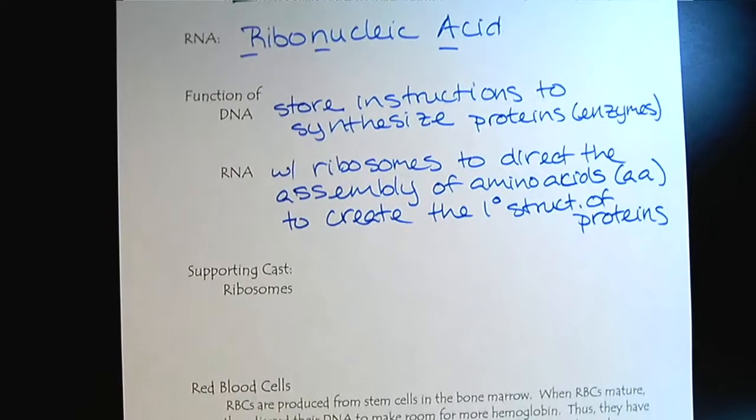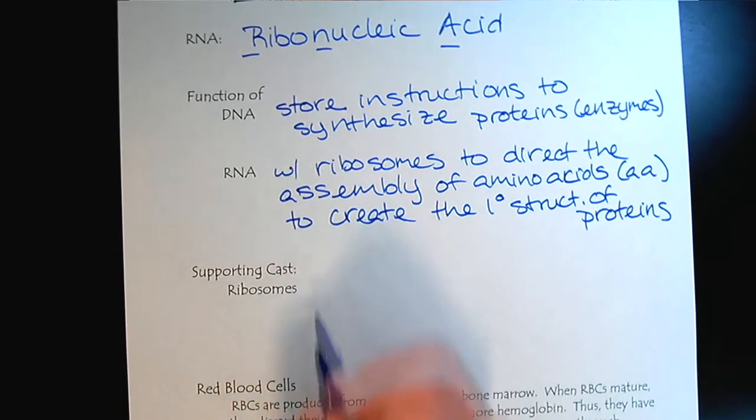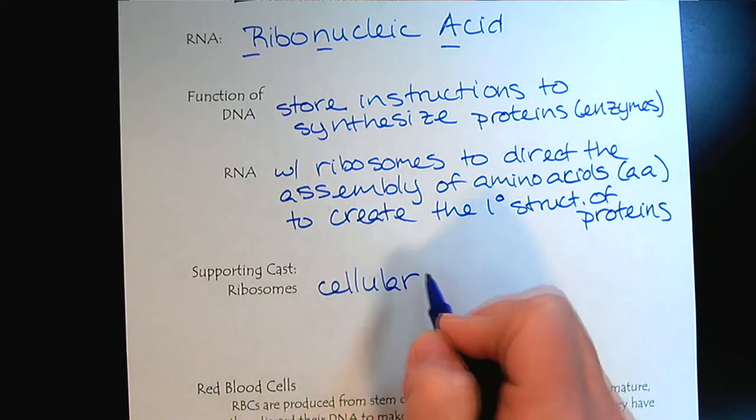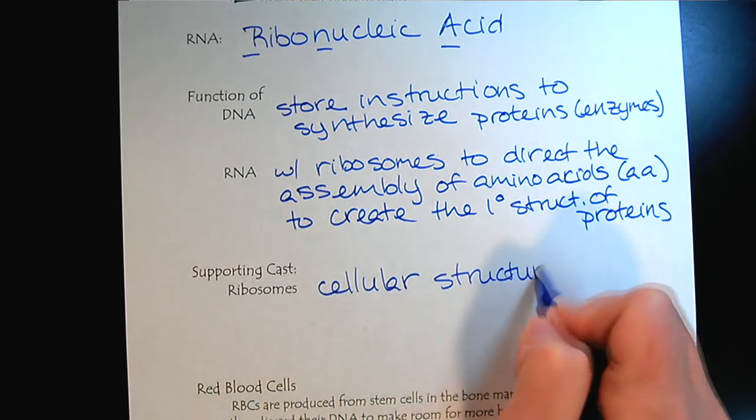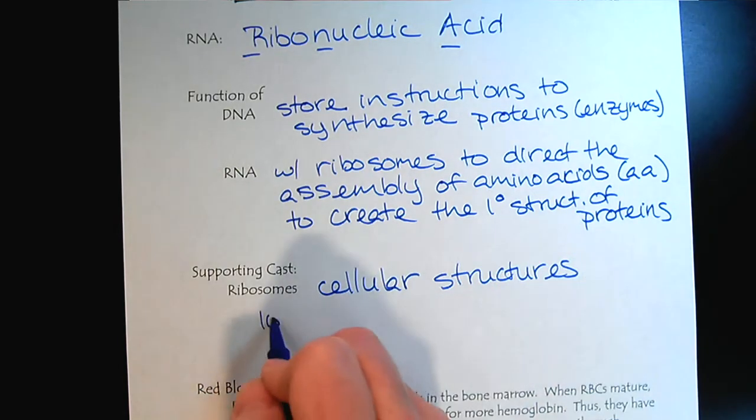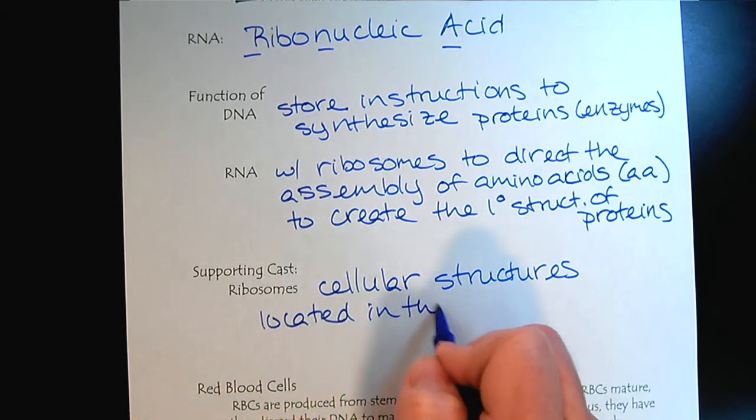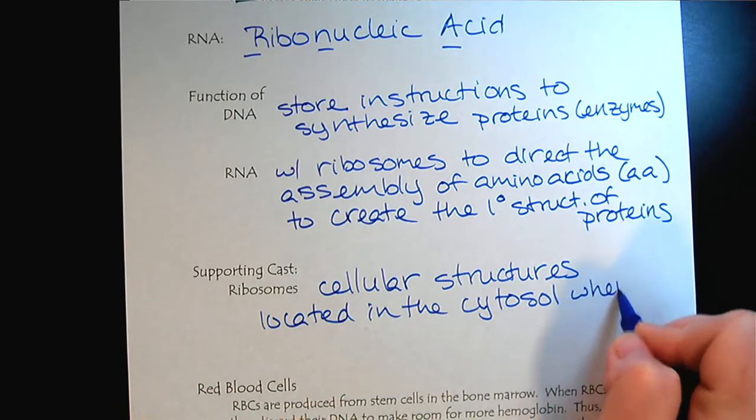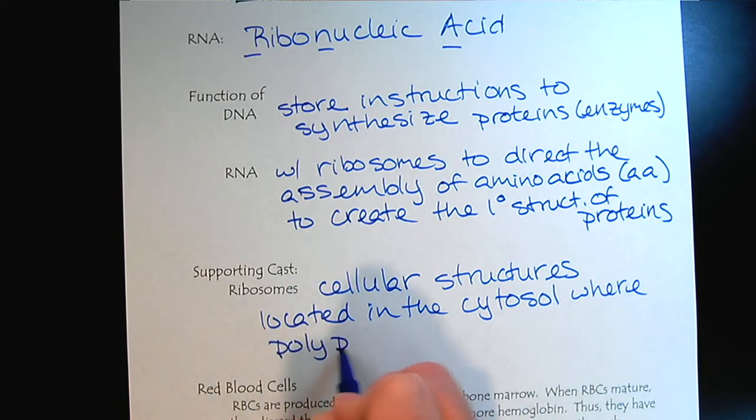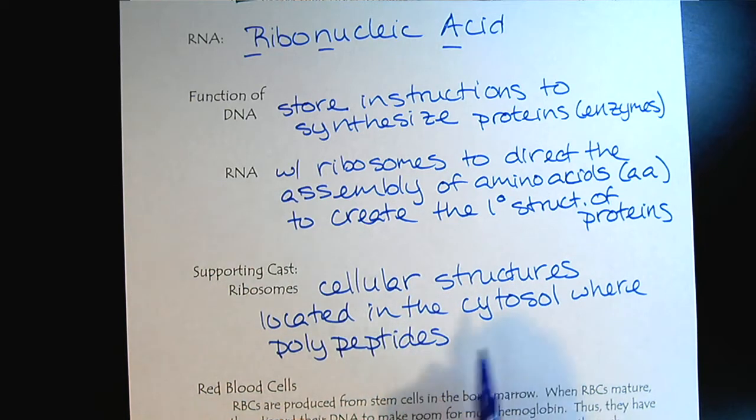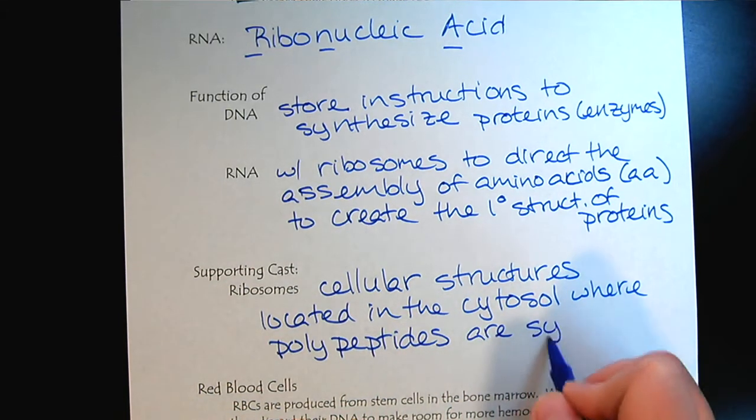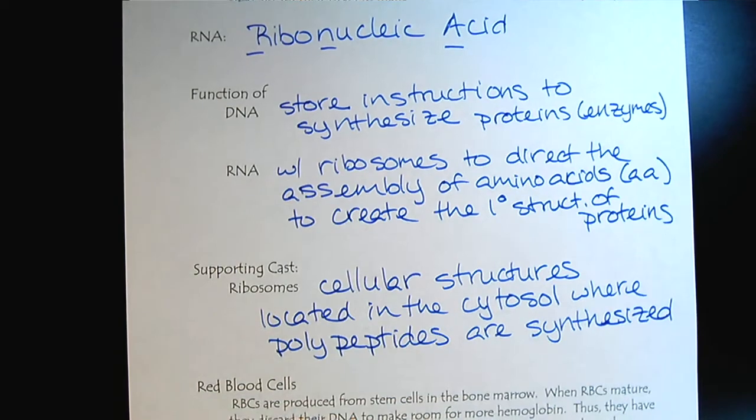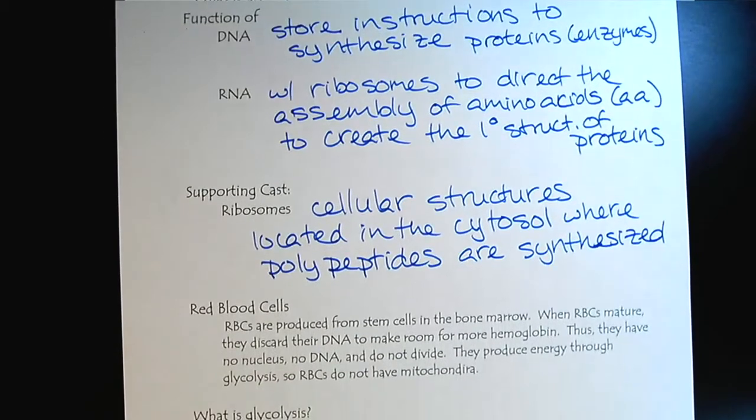The ribosomes are the cellular structures located in the cytosol where polypeptides are synthesized. We call them polypeptides at this point. We don't call them proteins yet, because they need to have their secondary, tertiary, and possibly quaternary structure created before they assume a biological function.